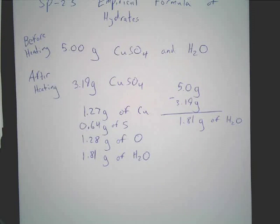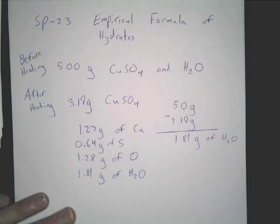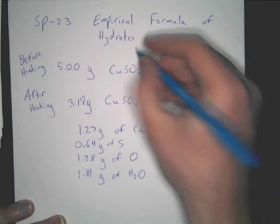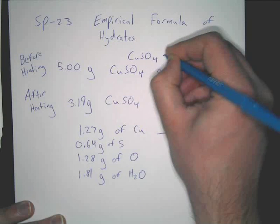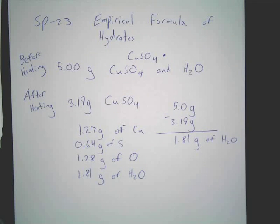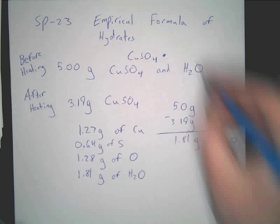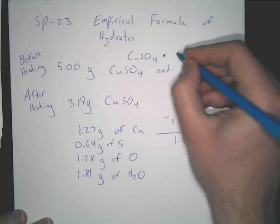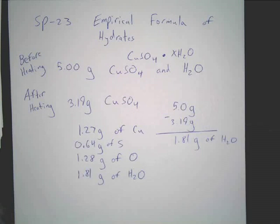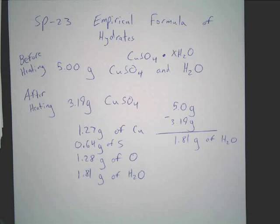The way you'd write out a hydrate — you remember how that dot symbol means multiplication? You'd write CuSO₄, then that dot, then H₂O, and then a coefficient for H₂O — it could be 1, 2, 3, 4, 5, 6, 7, 8, whatever. That's how many water molecules you'd have per copper sulfate.